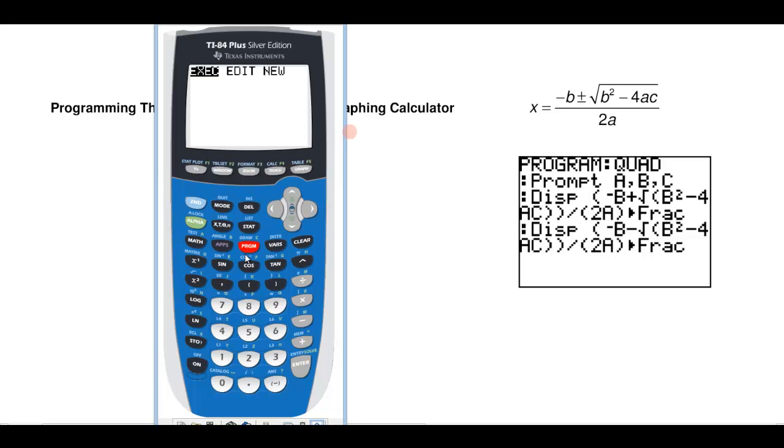First thing you need to do is hit the program button and I'd like to create a new program. So arrow over where it says new and hit enter and let's give it a name. Let's call it the quad program. Notice it's blinking with an alpha character so all I have to do is come down here and find the Q and the U, right here, and then an A and a D. So I'll call this the quad program and hit enter and now all I need to do is enter the commands.